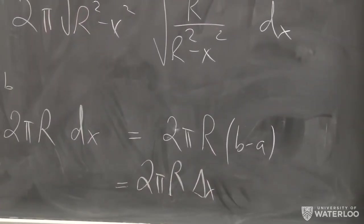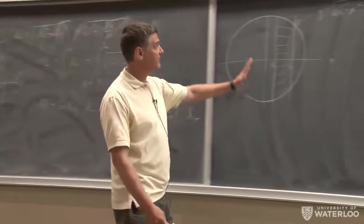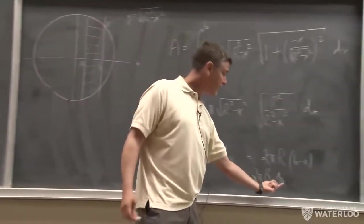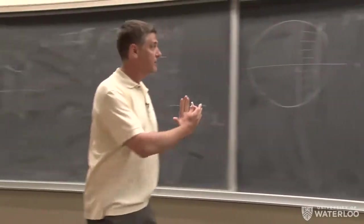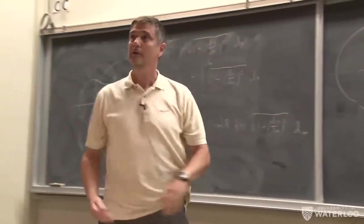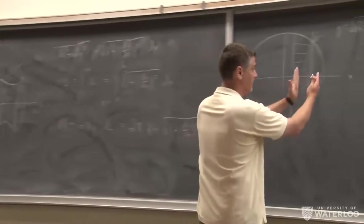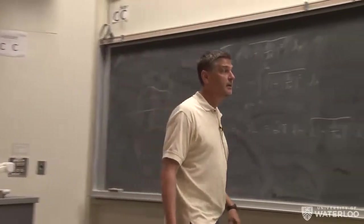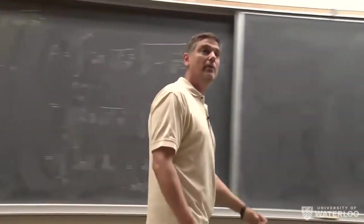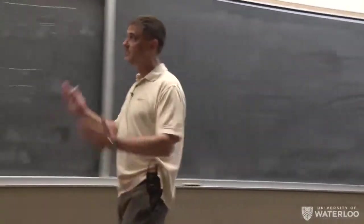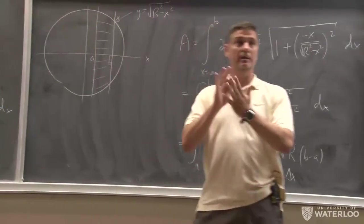This is actually sometimes a surprising result because it tells you that the surface area of the portion of the sphere between two planes only depends on the separation between the two planes — it doesn't depend on the position. So if you slice it with two planes near the equatorial circle, or near the pole, the area only depends on the separation between the two planes. That's a well-known result in spherical geometry.